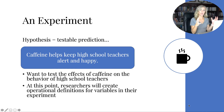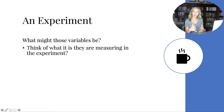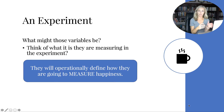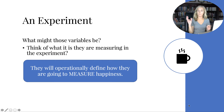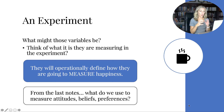Once you have your hypothesis and know who you want to study, you create operational definitions of your variables. What are the variables in this experiment? Well, one is caffeine and the other is happiness. You're going to assign caffeine to your groups and then measure how happy they are — but you have to operationally define how happiness will be measured so that other people can do it the same way. From the last notes, we use a survey to measure attitudes, beliefs, preferences, feelings, and opinions.